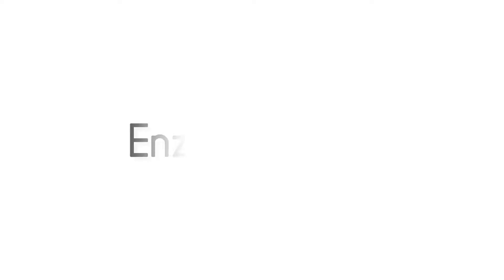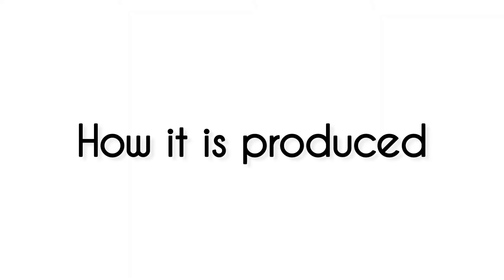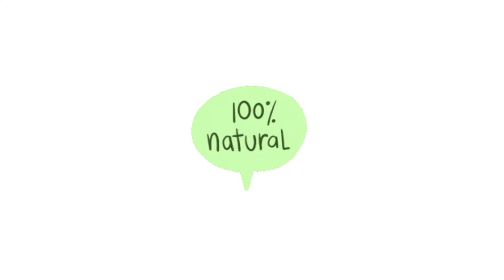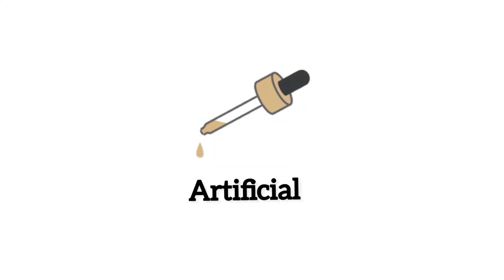Enzymes used in industries: cheese is made by using rennet. Rennet is an enzyme which is produced through cows. There are two types of rennet — one is a hundred percent natural and another one is a hundred percent artificial.